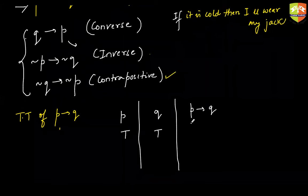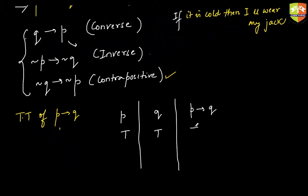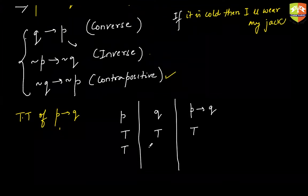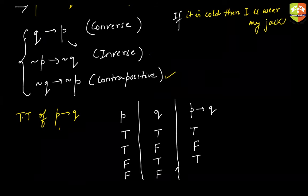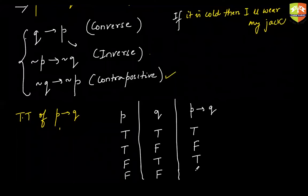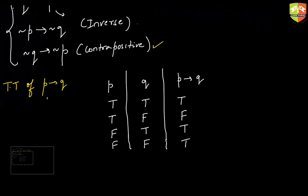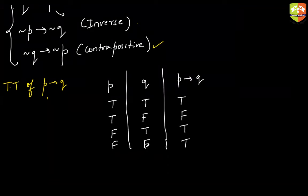Let us look at the truth table of 'if P then Q.' If both P and Q are true, the result is true. If P is true and Q is false, the result is false. The surprising part: if P is false and Q is true, the result is true. And if both are false, the result is also true.